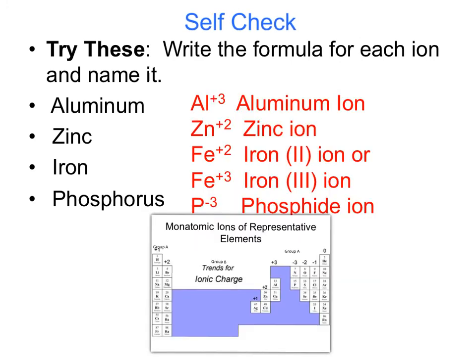All right, so notice that aluminum is going to be a plus 3 ion, and it's called the aluminum ion. Zinc is one of those transition elements that only has one charge, and so it has a plus 2 charge. And because it only has one charge, we will not put the Roman numeral behind it, so it's just called the zinc ion.